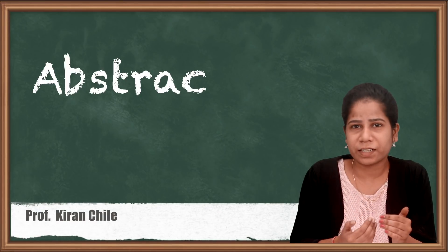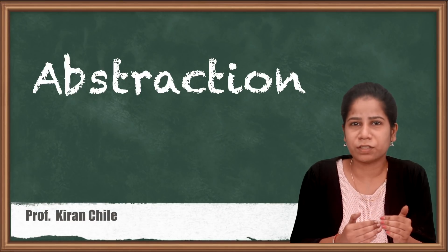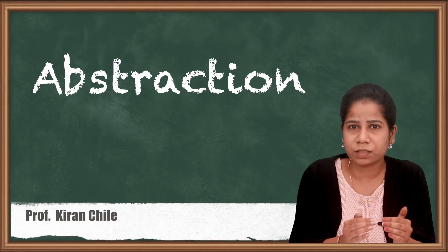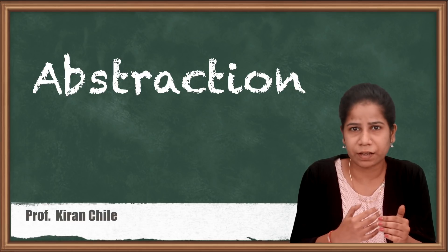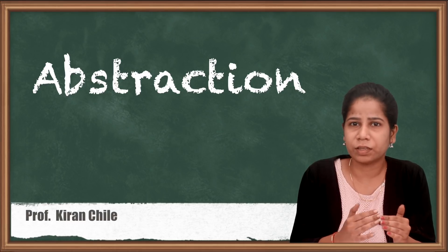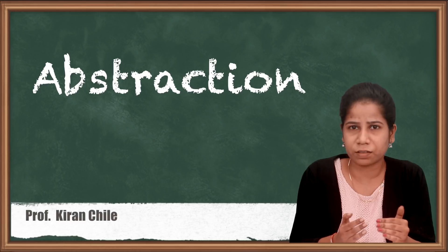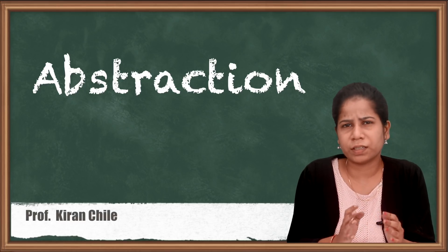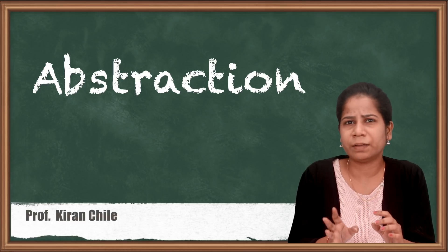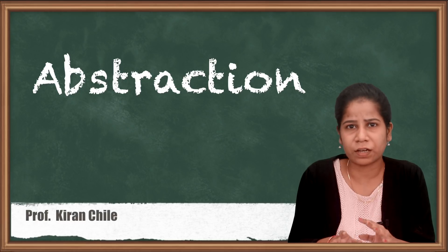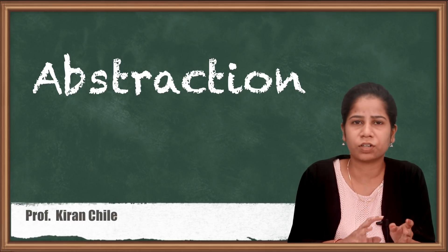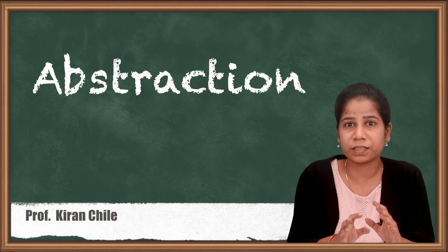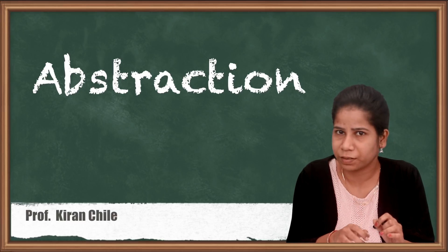Hello friends. In the last lecture we have seen what is an object. It is having three characteristics and we have seen these characteristics also. An object is a real-time entity which is having well-defined structure and well-defined behavior. It is having attributes and behavior.